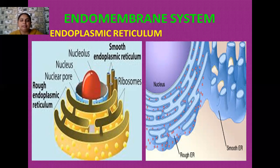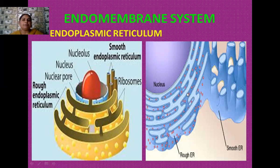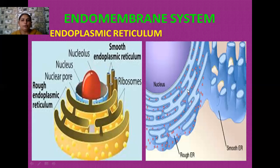The first endomembrane organelle is the endoplasmic reticulum. Depending upon the presence or absence of ribosomes, the endoplasmic reticulum is broadly divided into two types. If ribosomes are present on the surface it is known as rough endoplasmic reticulum; if ribosomes are absent it is known as smooth endoplasmic reticulum. Overall, the endoplasmic reticulum consists of tube-like structures arranged in the form of a stack in a parallel manner — many tube-like structures stacked over one another in parallel fashion.